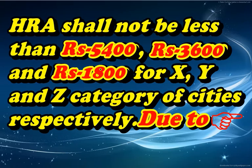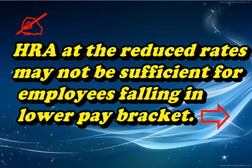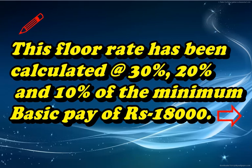HRA shall not be less than Rs. 5,400, Rs. 3,600 and Rs. 1,800 for X, Y and Z category of cities respectively, as HRA at the reduced rates may not be sufficient for employees falling in the lower pay bracket. This floor rate has been calculated at the rate of 30%, 20% and 10% of the minimum basic pay of Rs. 18,000.